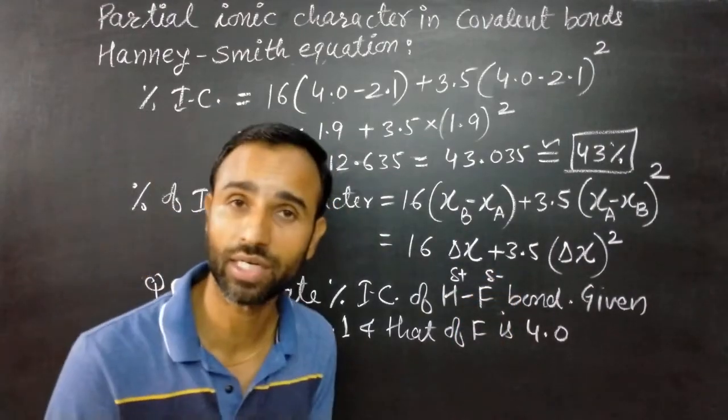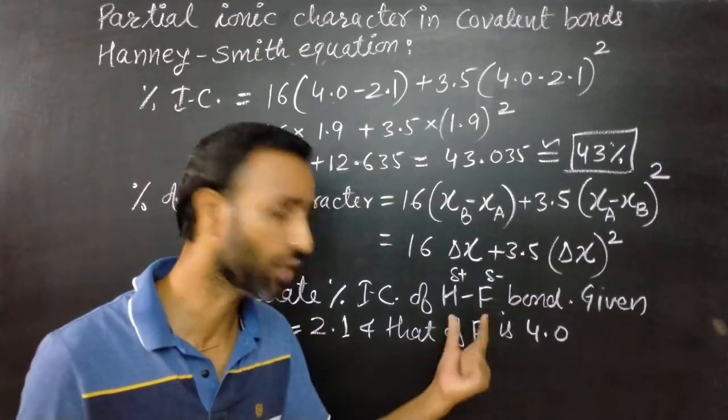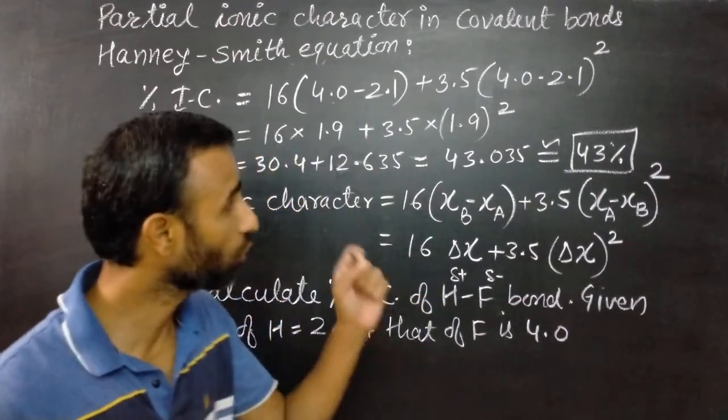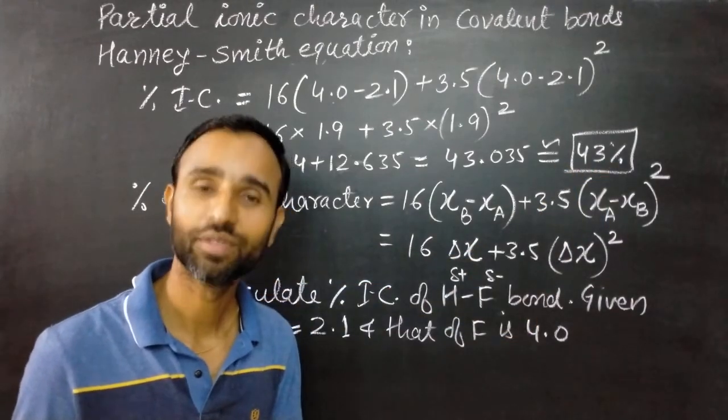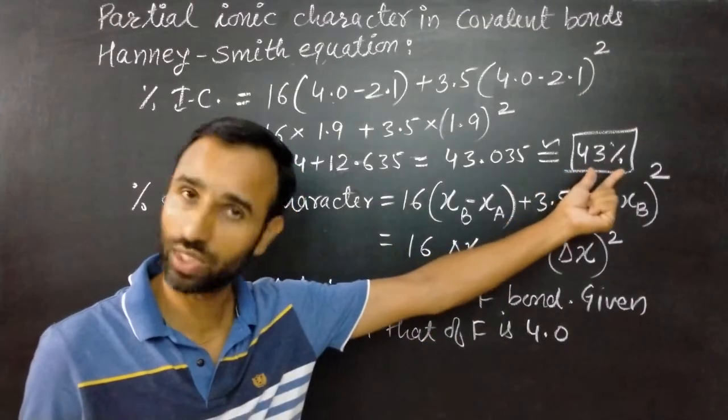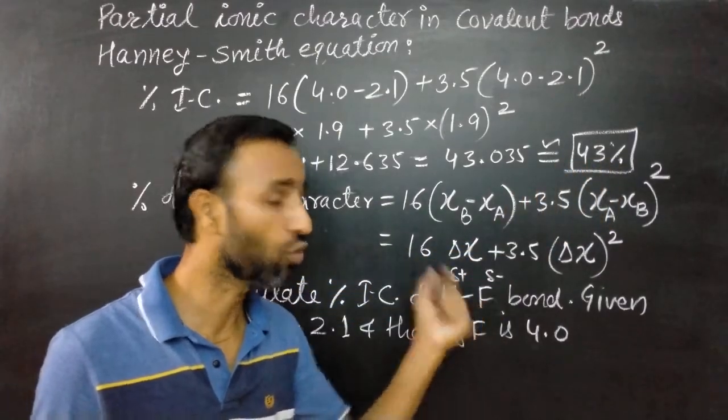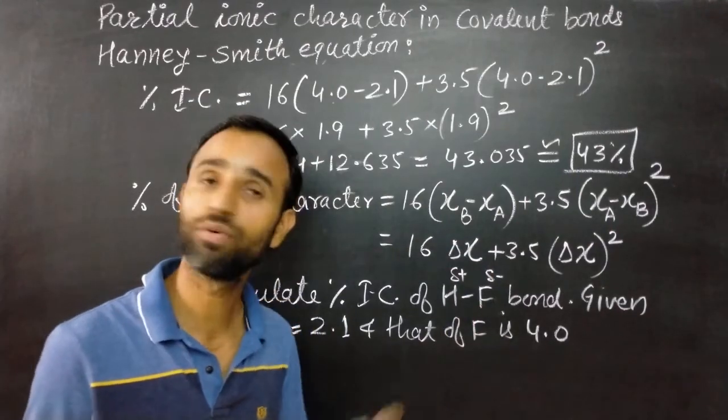The percentage of ionic character is 43 percent in HF bond. So percentage of covalent character is obviously 57 percent. Percentage of ionic character is 43 percent and percentage of covalent character is 57 percent in HF bond.